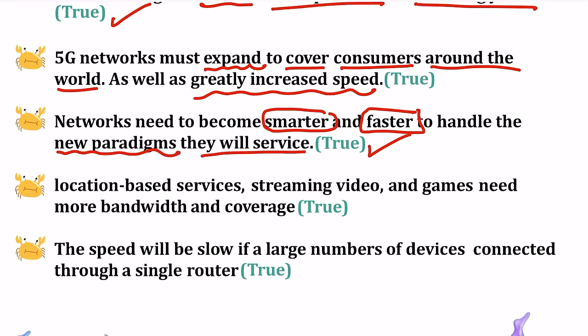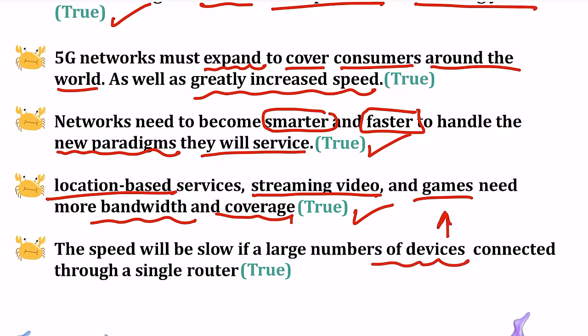الخدمات المعتمدة على تحديد الموقع، وبث الفيديو، والألعاب تحتاج bandwidth وcoverage أعلى - نعم، كلنا نواجه هذه المشكلة. GPS أيضاً يحتاج تغطية عالية وبث عالي. السؤال الأخير: السرعة ستكون بطيئة لما يكون عدد كبير من الأجهزة متصلين على راوتر واحد - نعم، الشبكة تصير مزدحمة وبطيئة. صحيح.